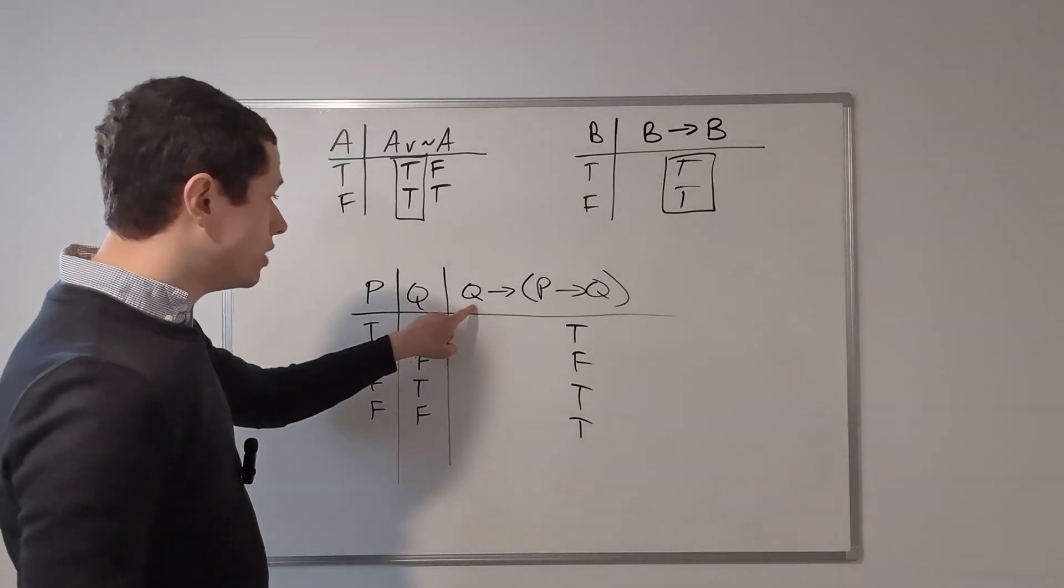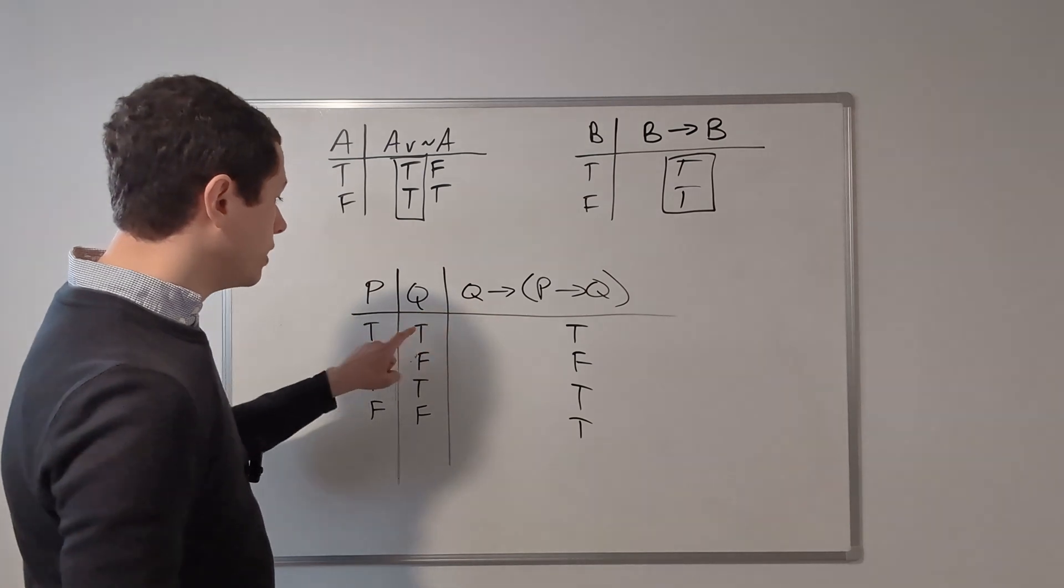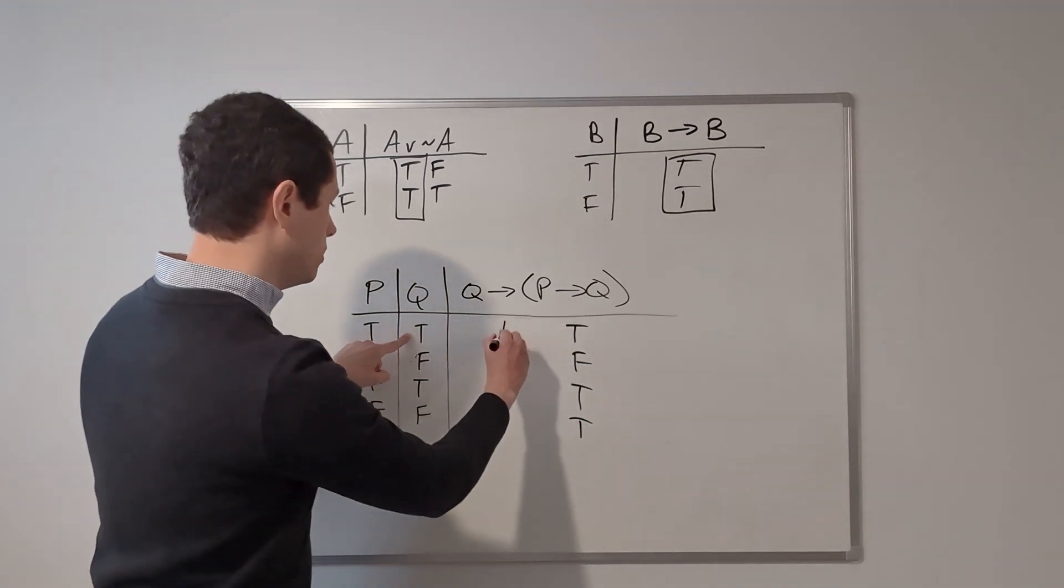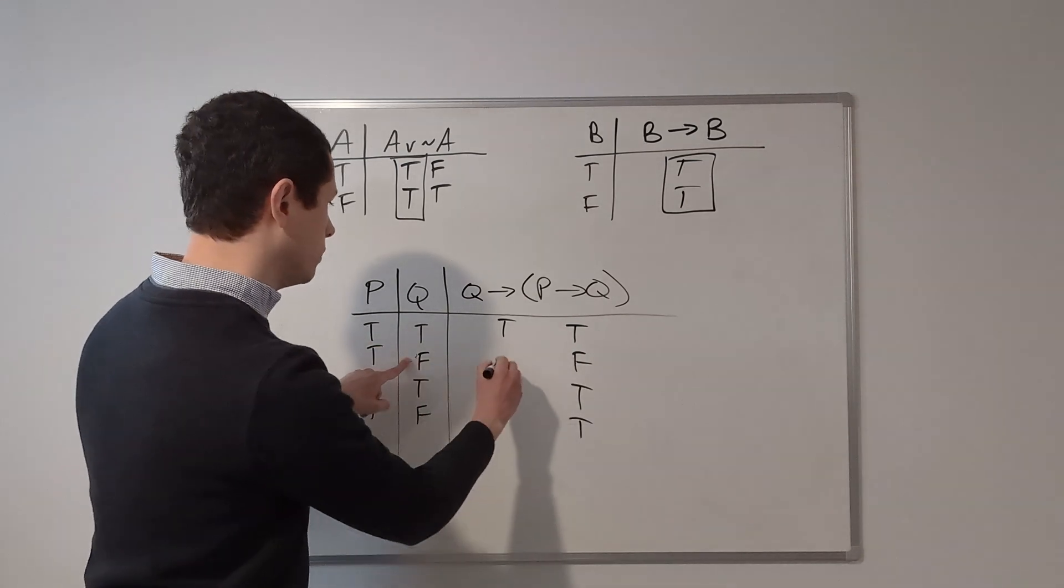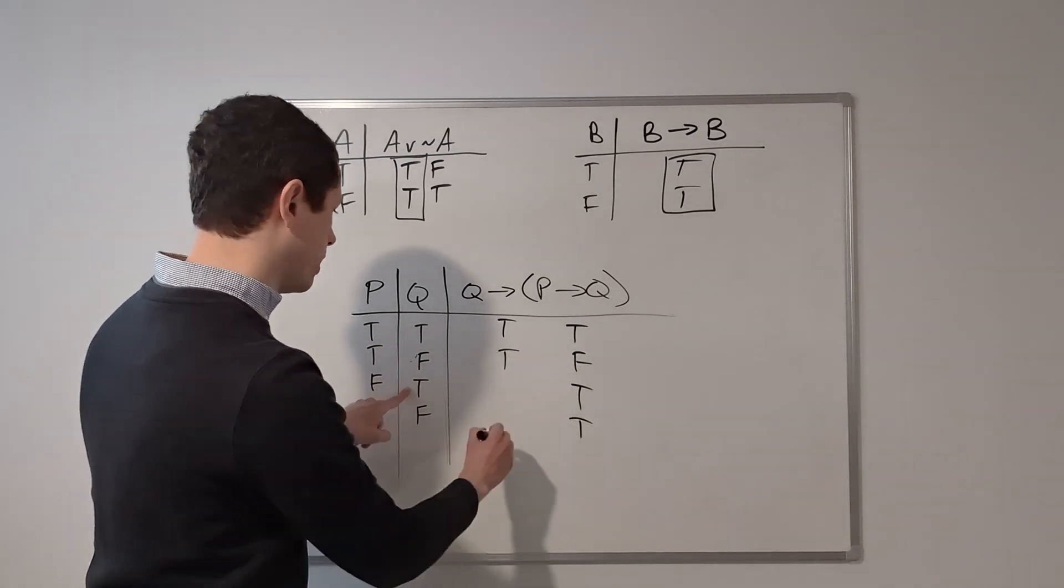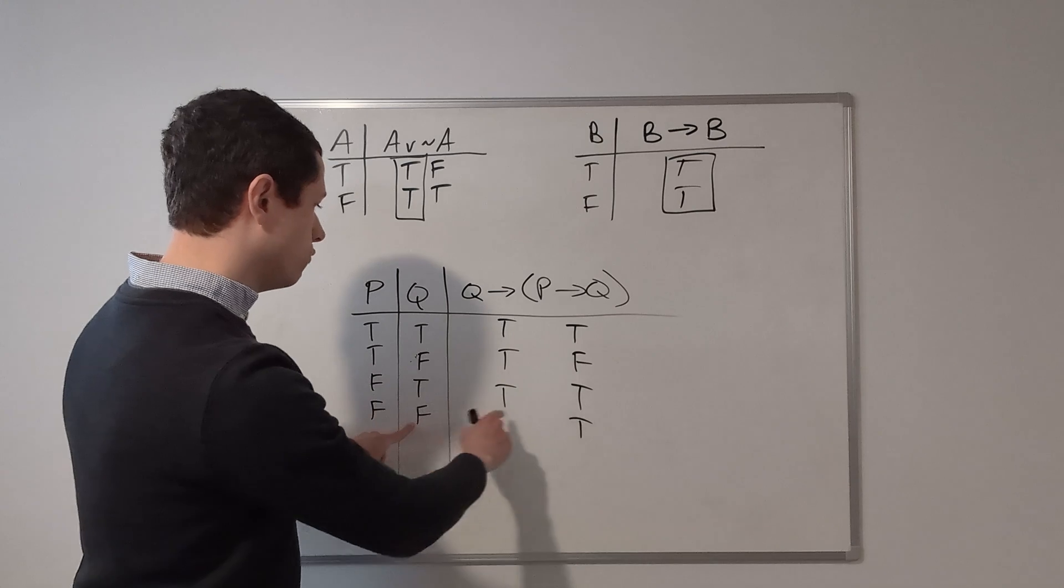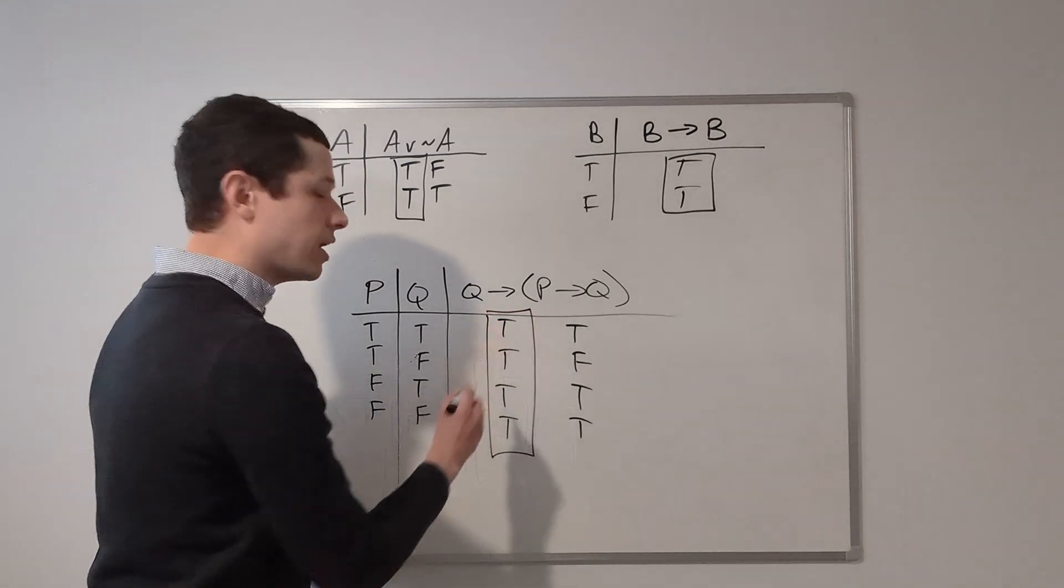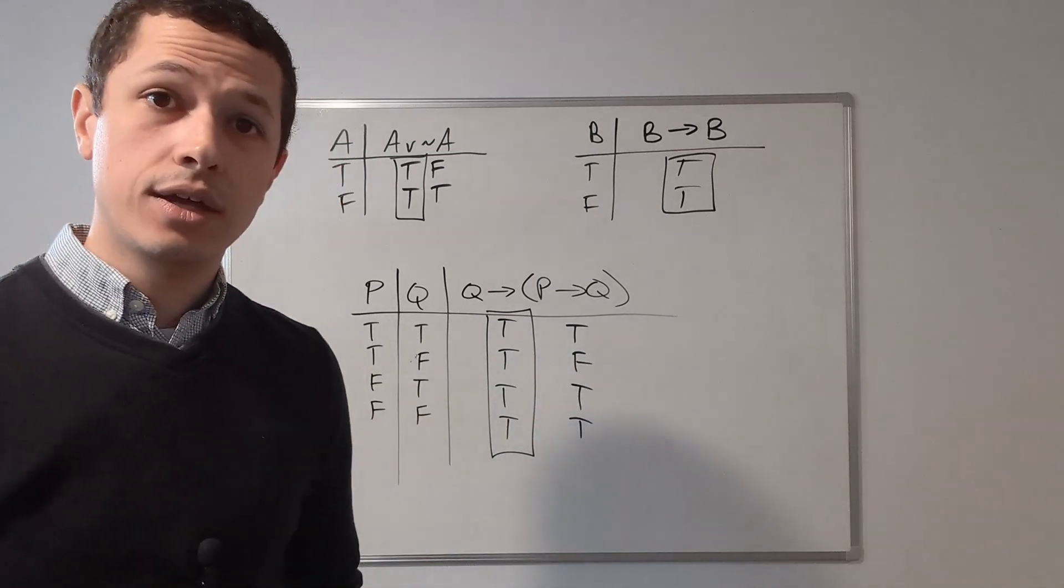And now we just go ahead and do the same thing, only now we're going to calculate Q implies these values. So true implies true. That's true. False implies false. That's true. True implies true. That's true. False implies true. That's true. And once again, we can see that we have a tautology.